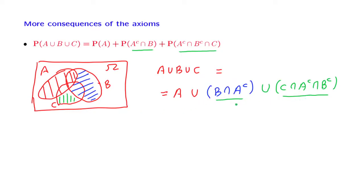So by the additivity axiom, the probability of this union is going to be the sum of the probabilities of the three pieces, and that is exactly the expression we have.